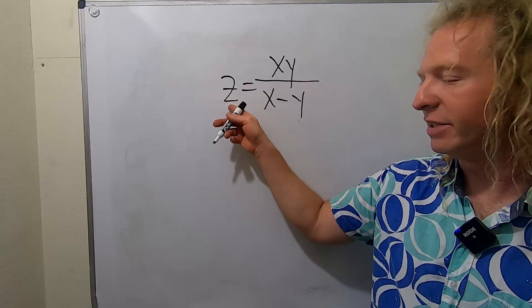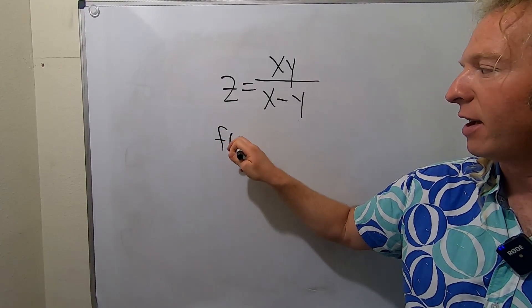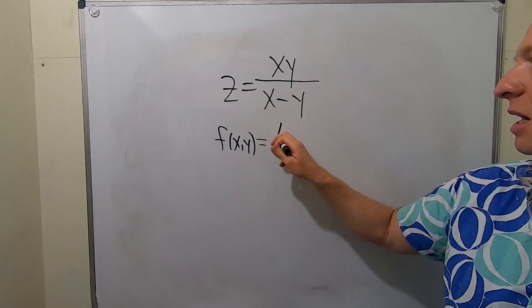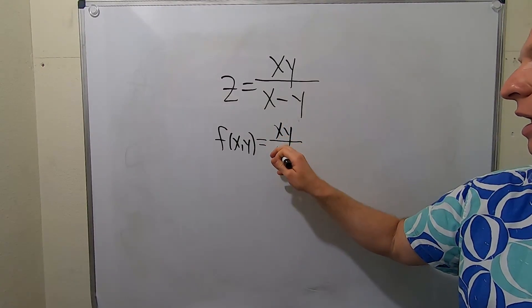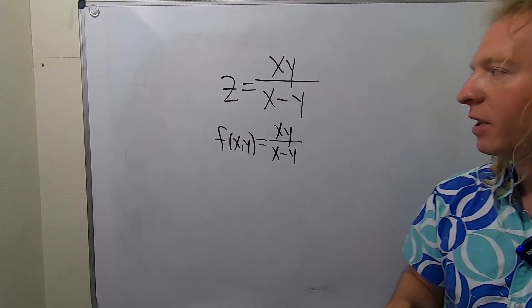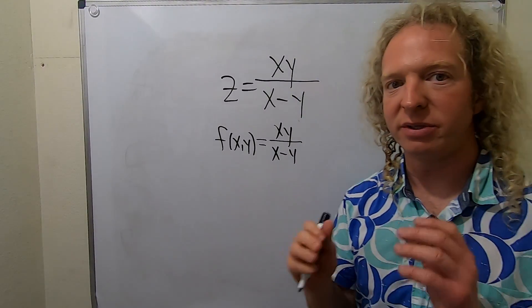If you're wondering what the function is, z is actually equal to f of x, y. So you can think of it like this: xy over x minus y. So your input is an ordered pair (x, y), and your output is a real number, z.